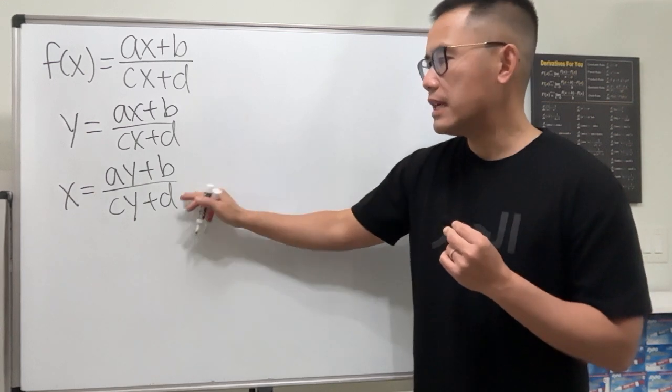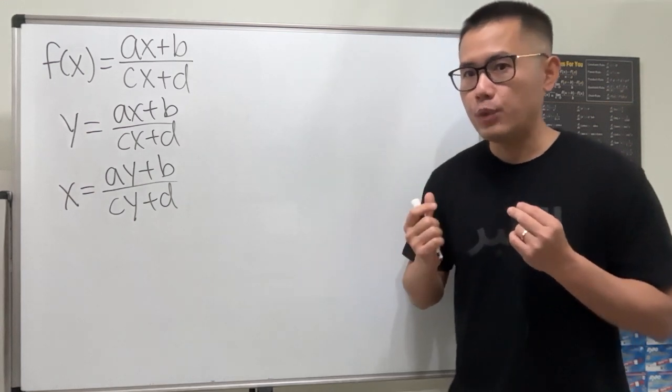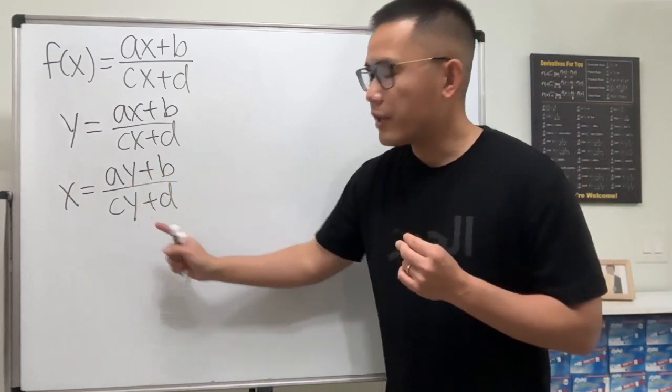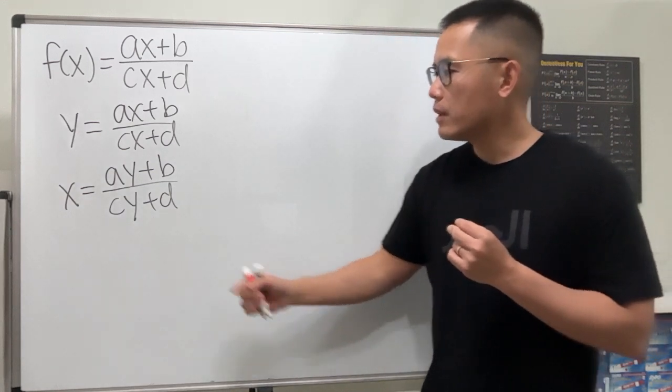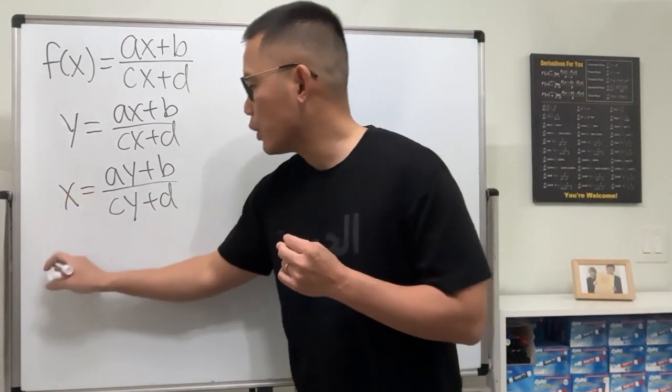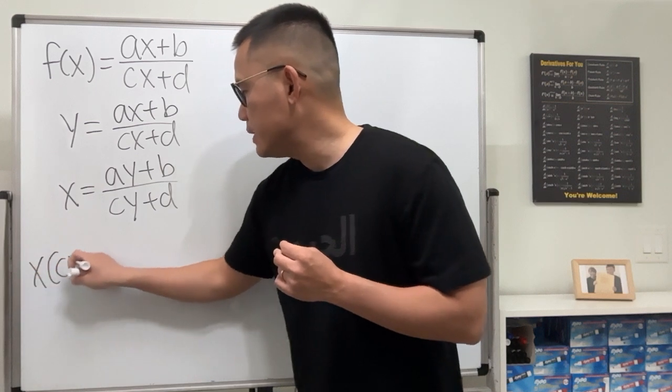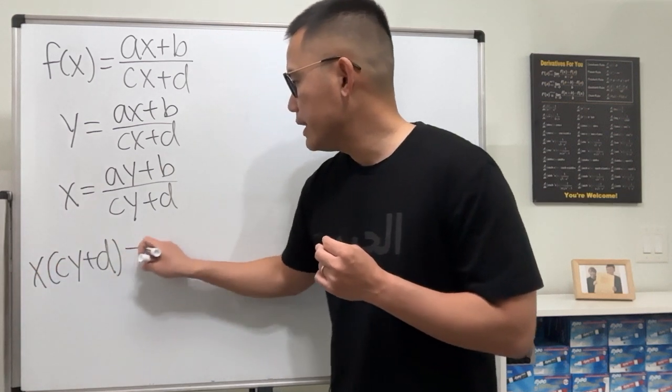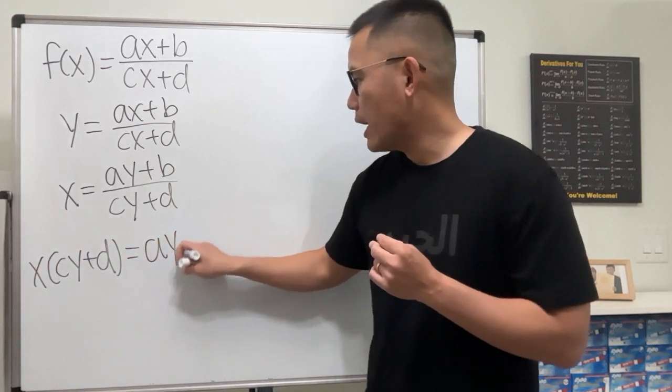So step 1, step 2. Now the next step is that we have to find the y right here. Let's multiply this to both sides. So we will have x times cy plus d equals this, ay plus b.